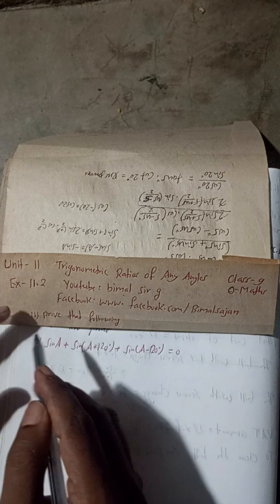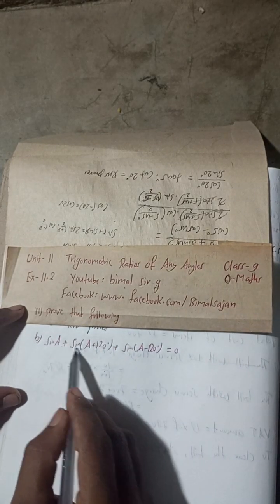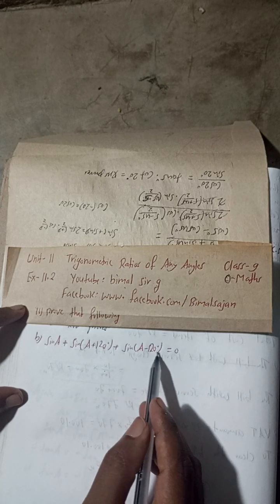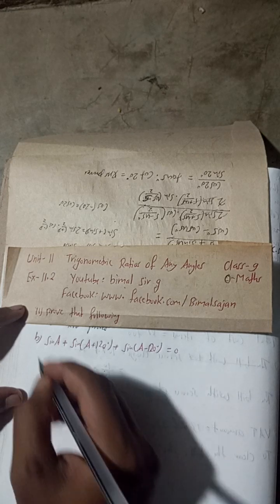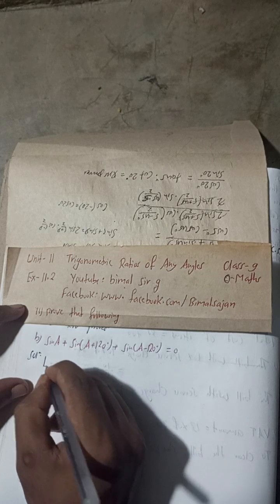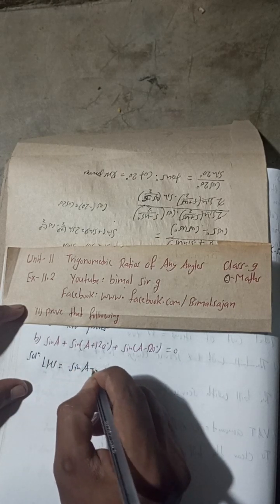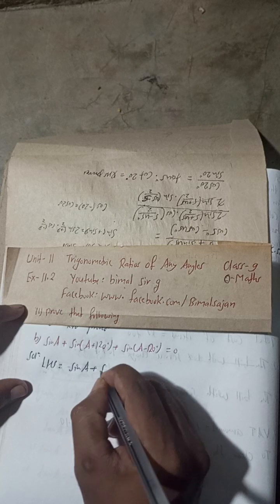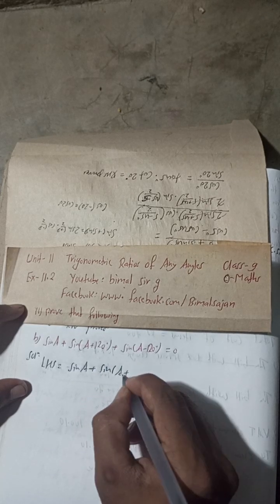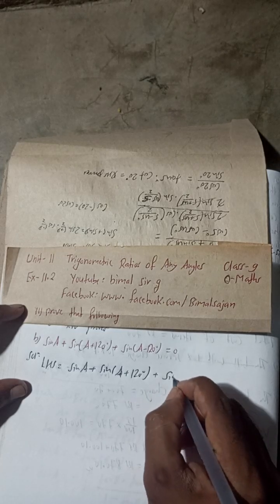Prove that: sin(A) + sin(A + 120°) + sin(A − 120°) = 0. The solution: LHS = sin(A) + sin(A + 120°) + sin(A − 120°).